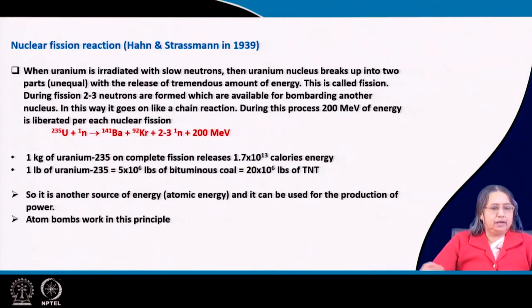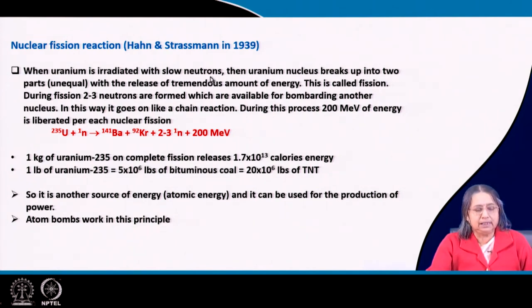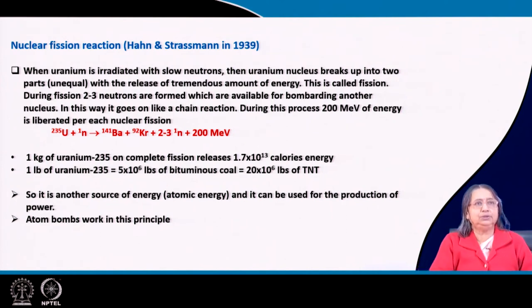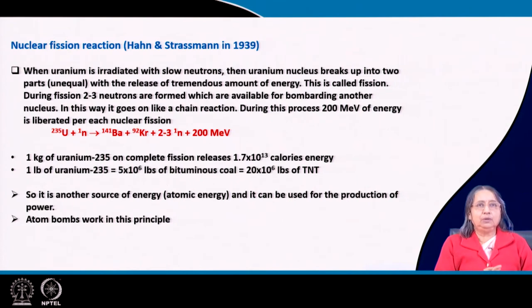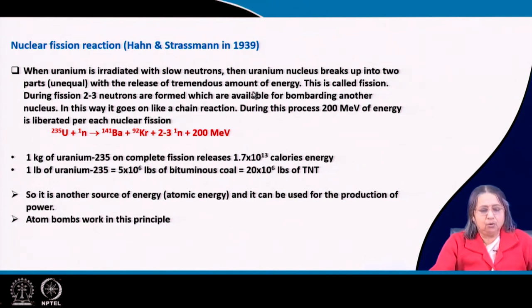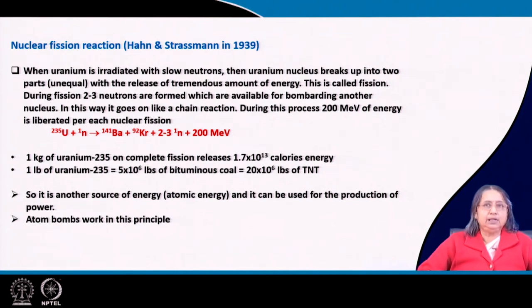Here I will tell you about nuclear fission reactions. Hahn and Strassmann in 1939 discovered that when uranium is irradiated with slow neutrons, the uranium nucleus can be broken up — it breaks into two unequal parts. Fission means breaking up, so the nucleus of uranium is broken into two fragments, which is why it is called a fission reaction. With this breaking, they release a huge amount of energy.